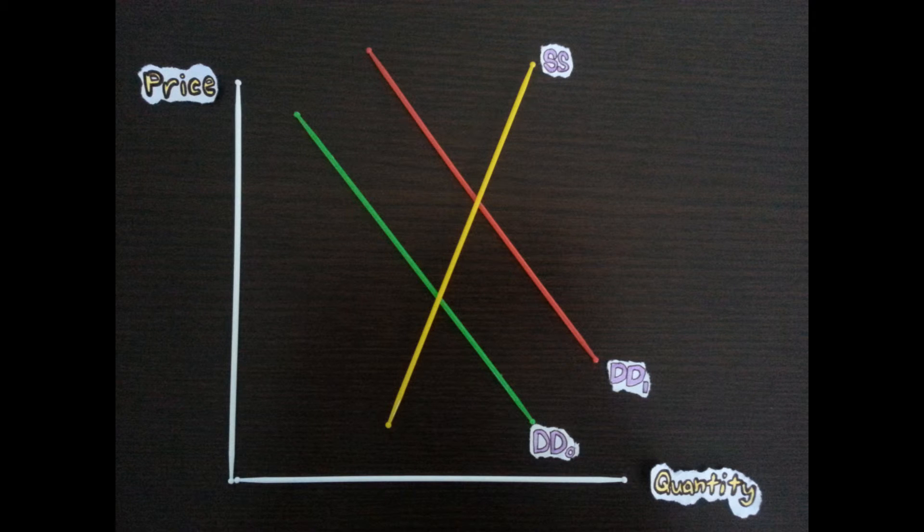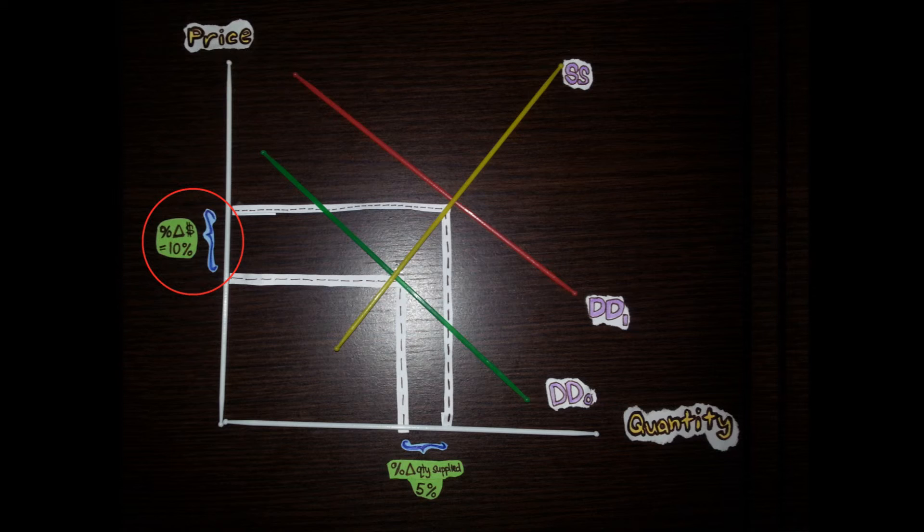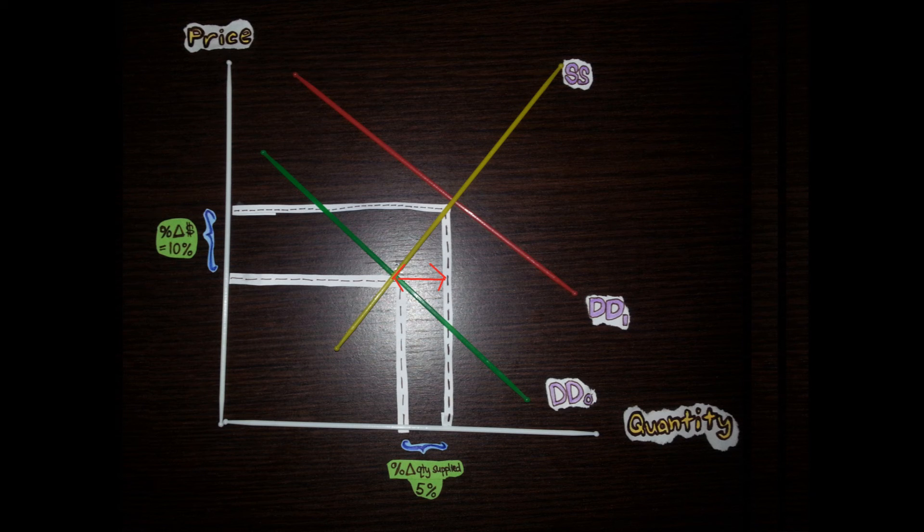If supply of margarine is price inelastic, the PES curve would be steep. If price of margarine also increases by 10% and the quantity supplied increases by only 5%, the PES coefficient would be 0.5, which is smaller than 1 but bigger than 0. Thus, the price elasticity of supply would increase the quantity supplied of margarine to a small extent.